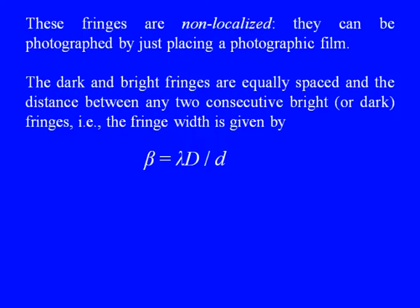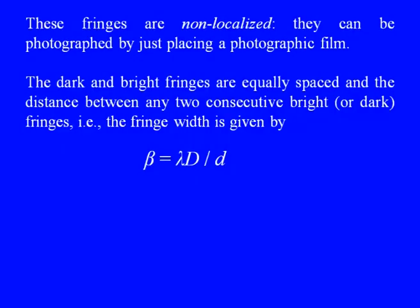These fringes are non-localized; they can be photographed by placing a photographic film at the screen. The dark and bright fringes are equally spaced — this is the basic characteristic of any interference pattern. The distance between any two consecutive bright or consecutive dark fringes, that is the fringe width, is given by λD/d, where λ is the wavelength of light, D is the distance of the screen from the line of sources, and d is the distance between the pair of sources.